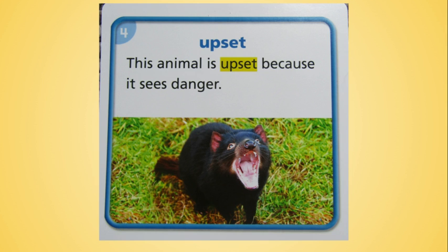Our next word is upset. Upset is a compound word. It has two smaller words — up and set — that are put together to make the word upset. The sentence says this animal is upset because it sees danger. That tells me if they're upset, it's describing how you might feel when you see danger. A good definition for upset is worried or unhappy about something. Can you think of an example of something that might upset a pet animal? The other day we had a thunderstorm and it upset my mom's dog quite a lot. Have you ever been upset when you lost something that you really needed? The other day I was upset because I lost my keys.